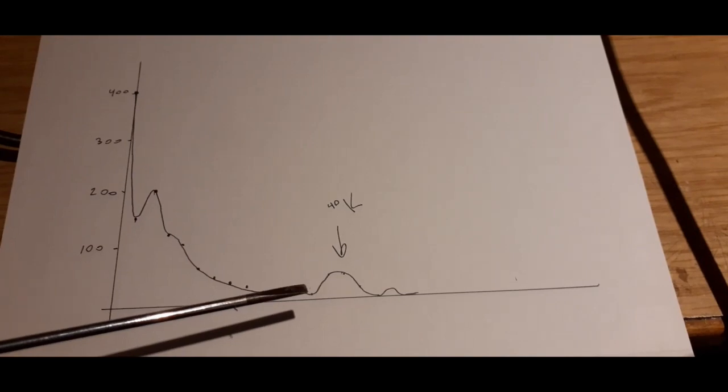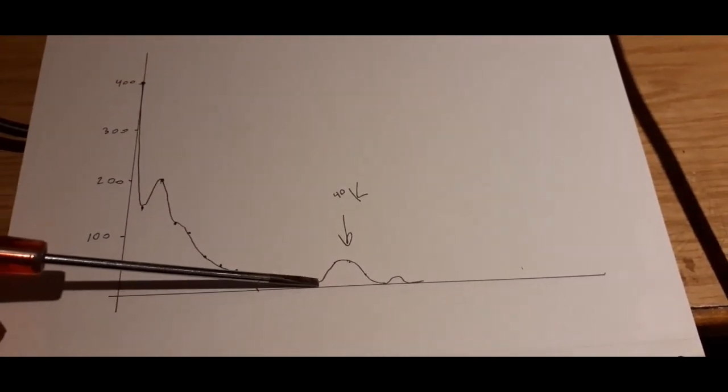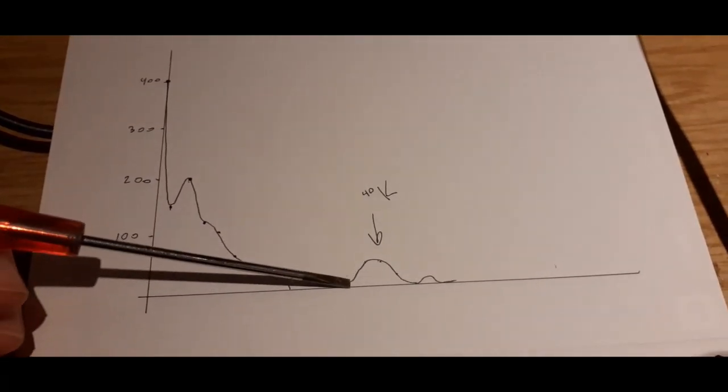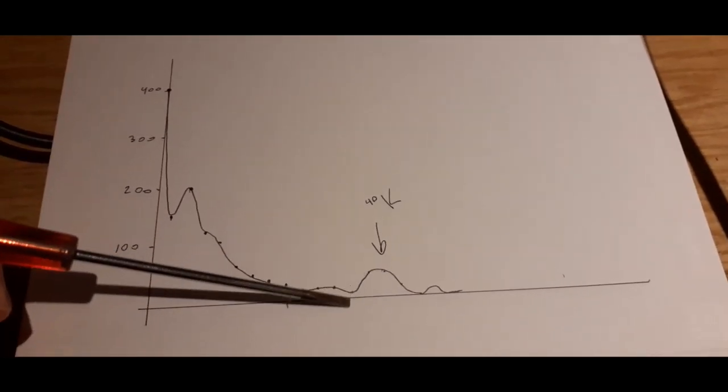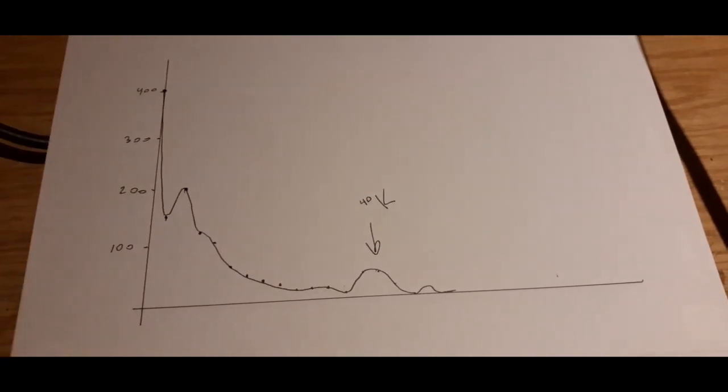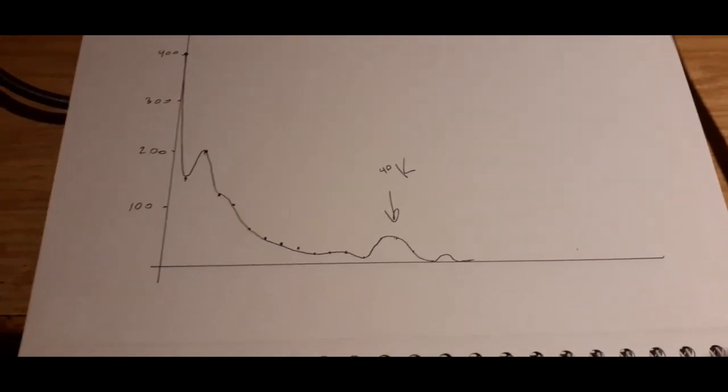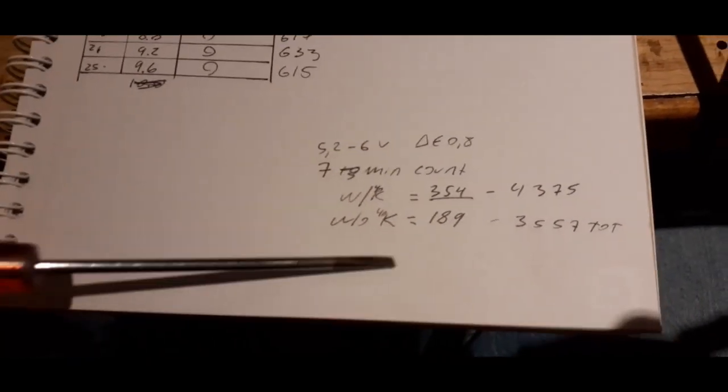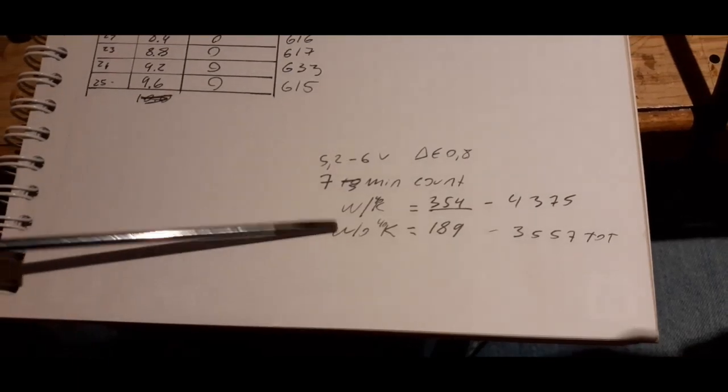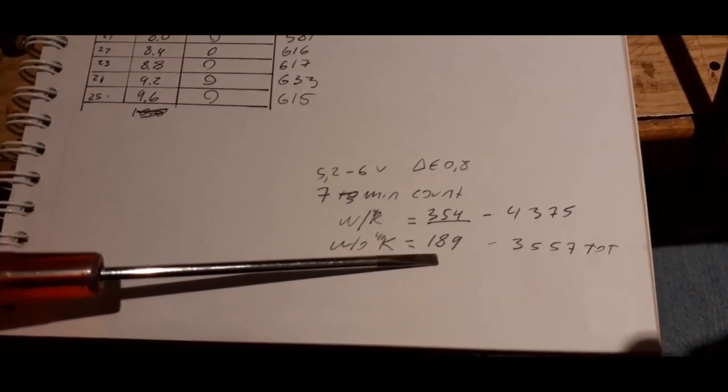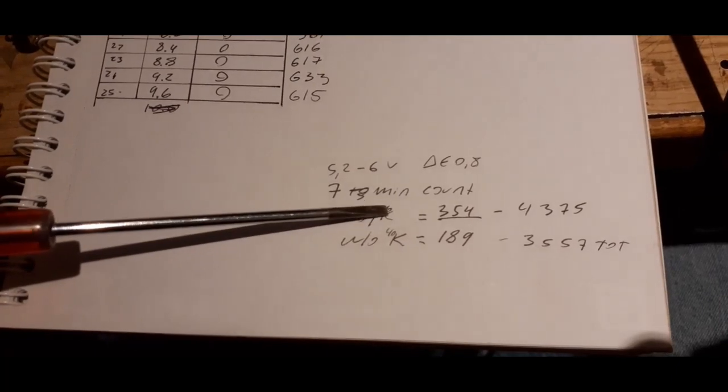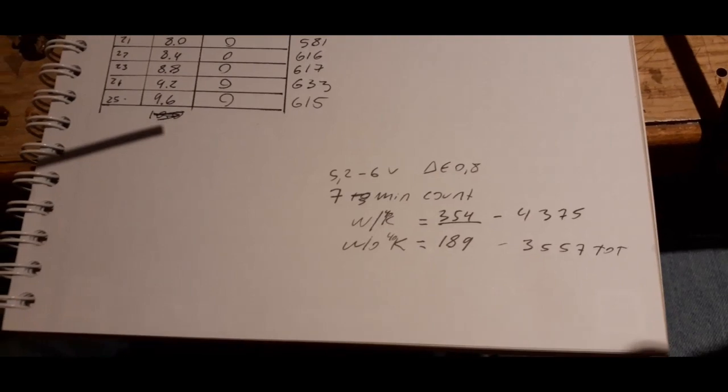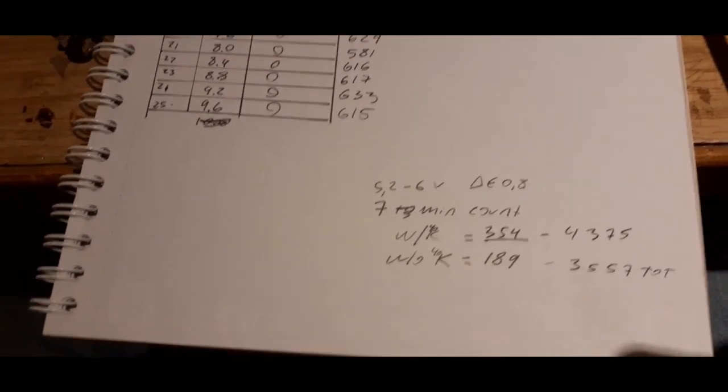Now we can use the single channel analyzer now that we know what this point is to verify whether or not this is potassium-40. Because we can just set a limit here, and set a limit here, and measure over 7-10 minutes, in my case 7 minutes, and then remove our potassium-40 source and measure the difference. And I've done exactly that. These are the counts. Without the potassium, I get 189 counts. With potassium combined, I get 354 counts. I think that's indicative that this is actually the potassium-40 photopeak we're seeing.